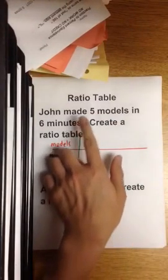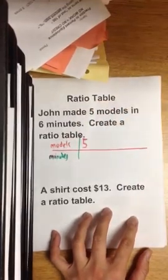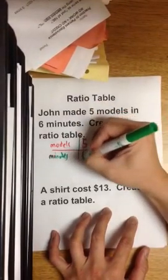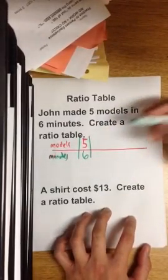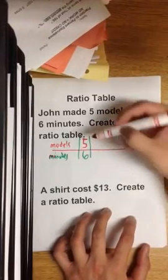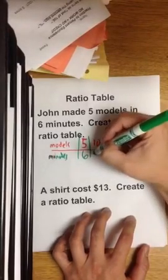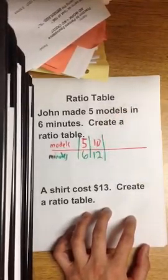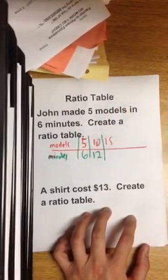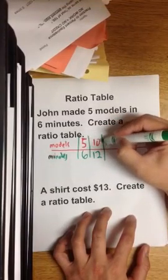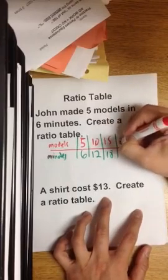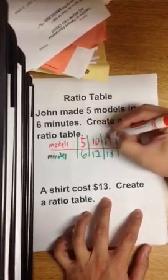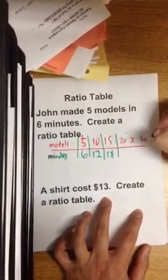John made five models in six minutes. If you skip count, you could say he made 10 models in 12 minutes, or 15 models in 18 minutes. Let's keep writing this table - that's 20, 25, 30, 35.